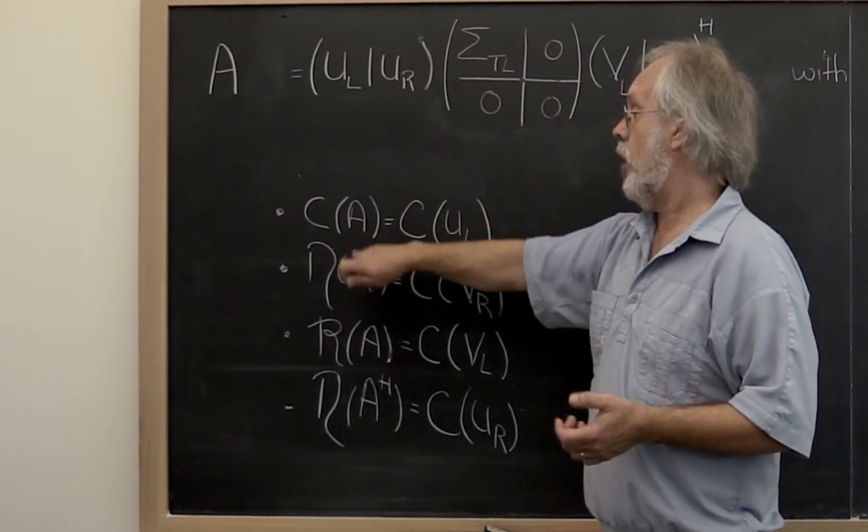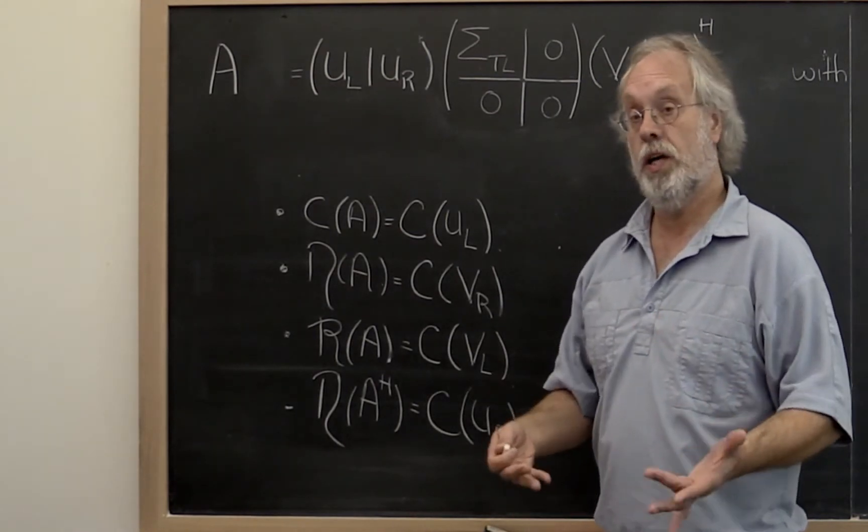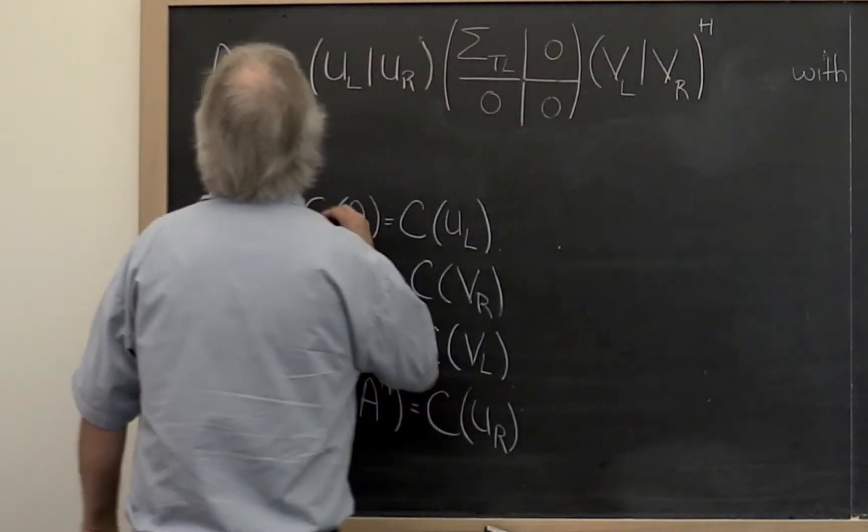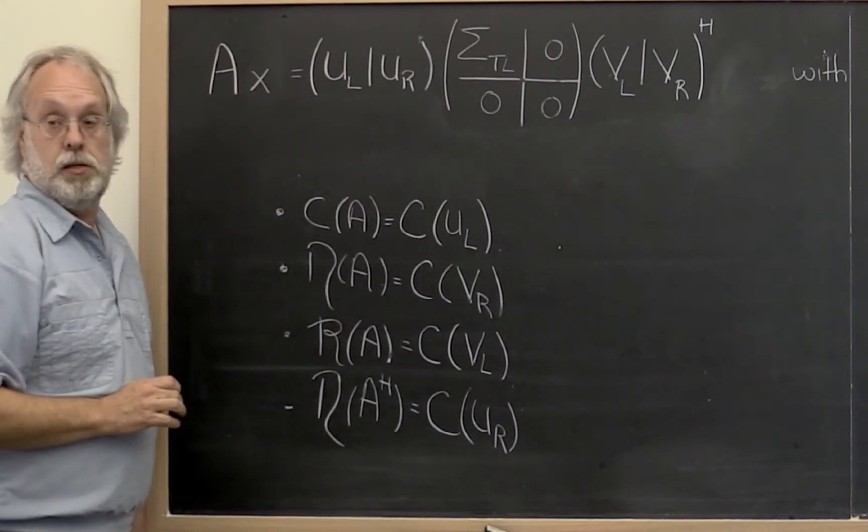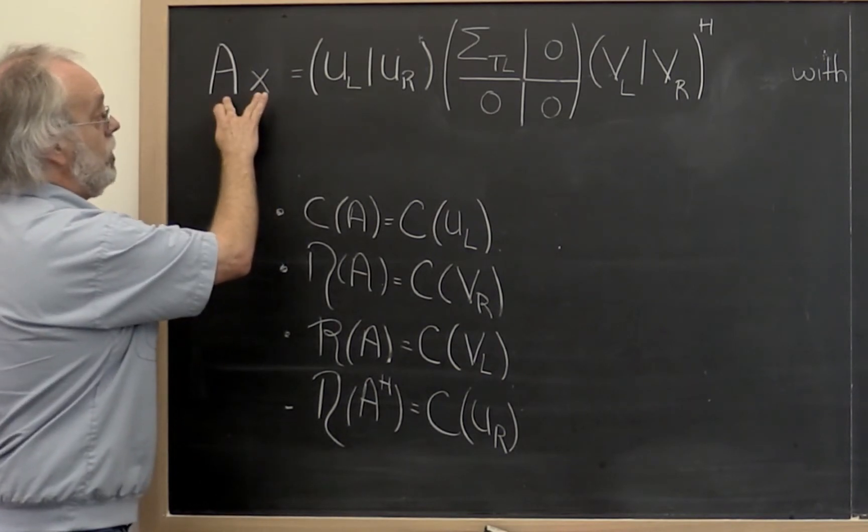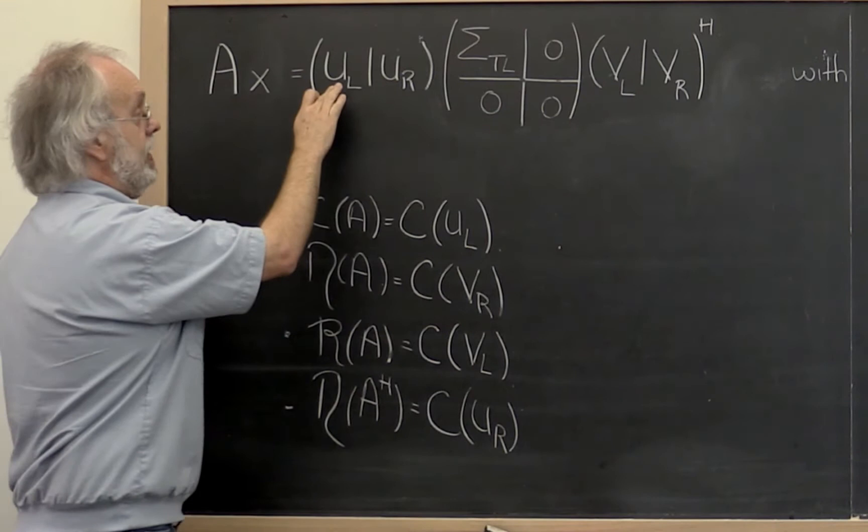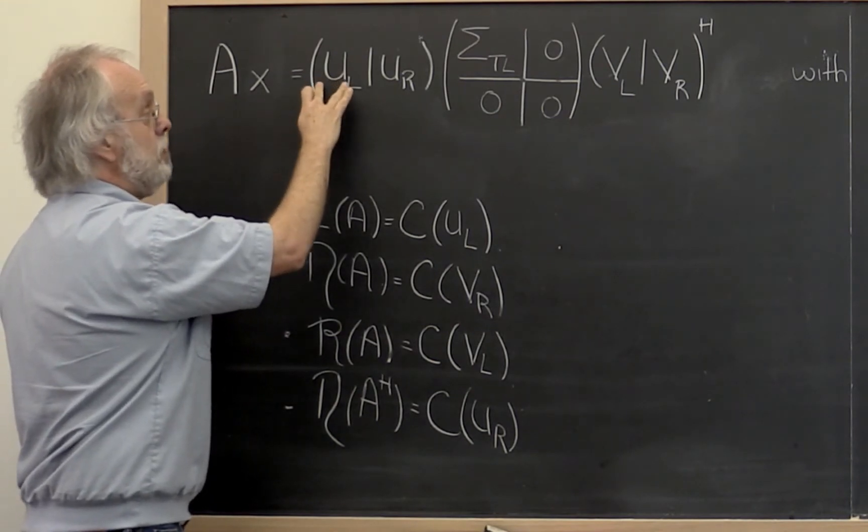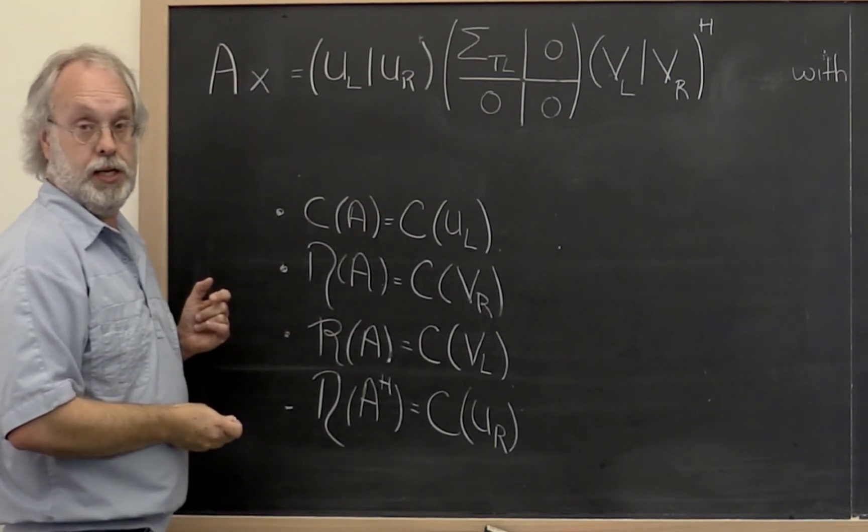Now if we pick an arbitrary vector in the column space of A, what we know is that there is some x such that the vector is equal to A times x. So we need to argue that we can also write that same vector as the matrix U_left times some vector, probably another vector.